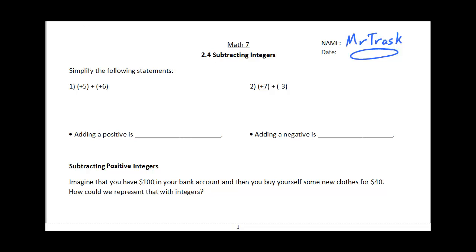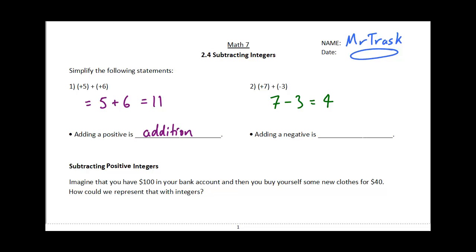We've already talked a lot about adding integers, whether they're positive or negative. And ultimately what's going to be best for you is to be able to take statements like you see here and simplify them. So positive 5 plus positive 6 is really just the same as 5 plus 6, which is 11. And this other example: positive 7 plus negative 3 is the same as 7 minus 3, which is 4. Whenever we add a positive, that's just regular addition, whereas adding a negative reduces our overall number — so that's basically just like subtraction.